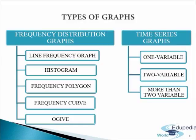A line graph obtained by joining these plotted points is called an arithmetic line graph or time series graph. These graphs help in understanding the trend, periodicity, etc. in long term time series data. Time series graph is also known as historiogram or line graph. Time series graphs are further classified into one variable graph, two variable graph, or more than two variable graph.